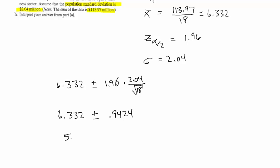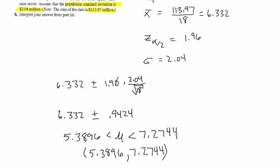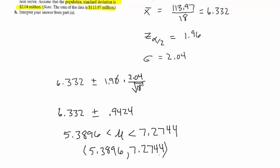So now I have 5.3896 is less than mu is less than 7.2744 and remember this was in millions of dollars. You might also see the answer just with parentheses so you could say 5.3896 comma 7.2744. We're saying the true mean of venture capital investments in the fiber optic sector is going to be between 5.3896 and 7.2744 millions of dollars. Now it wants us to interpret our answer.